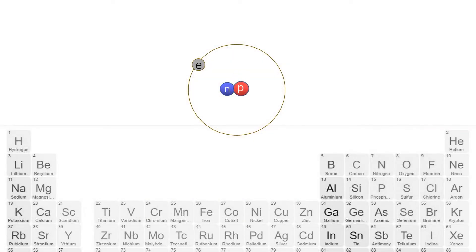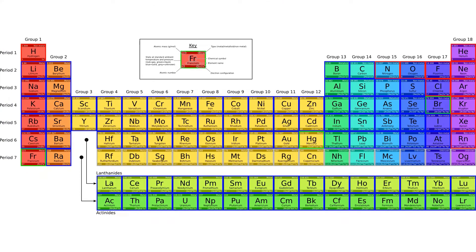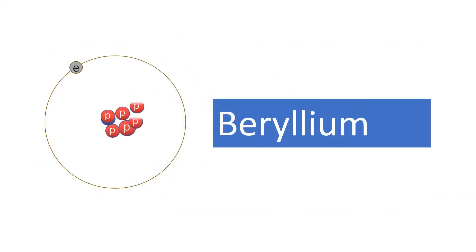An atom with one proton is an atom of hydrogen. An atom with two protons is helium. With three protons, it becomes lithium, and so on through the rest of the periodic table. Each time you add a proton, you get a new element.